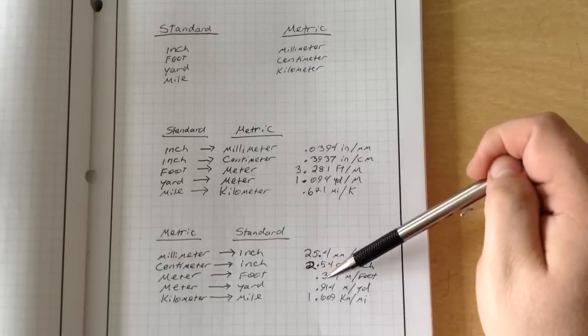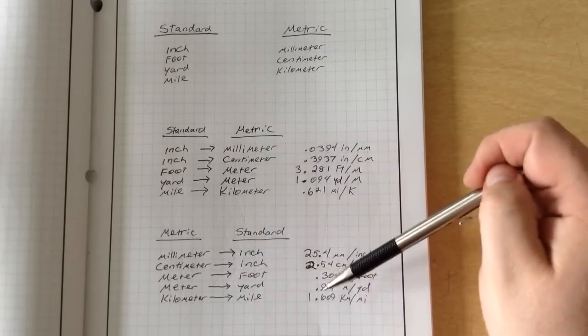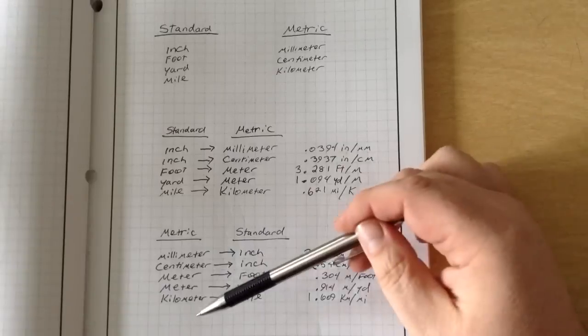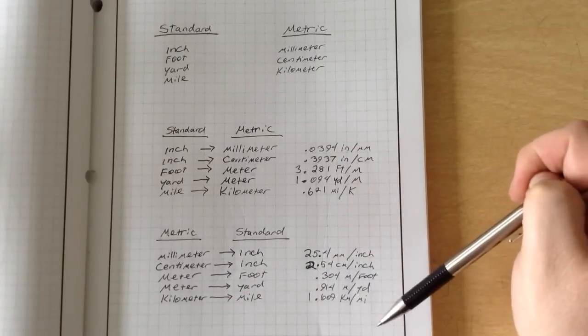Meter per foot, there's 0.304 meters per foot. Meter per yard, 0.914 meters per yard. And kilometer per mile, there's 1.609 kilometers per mile.